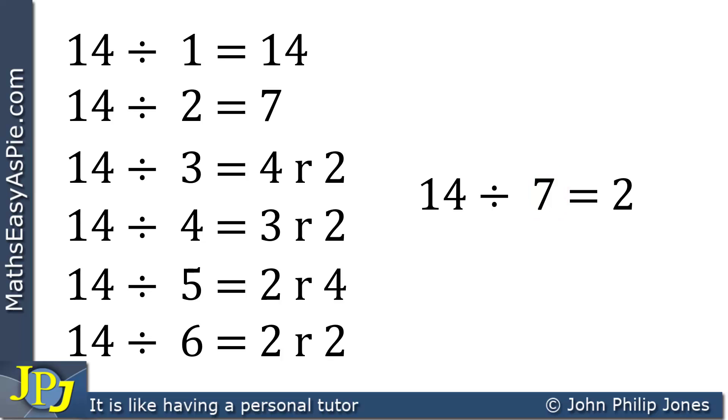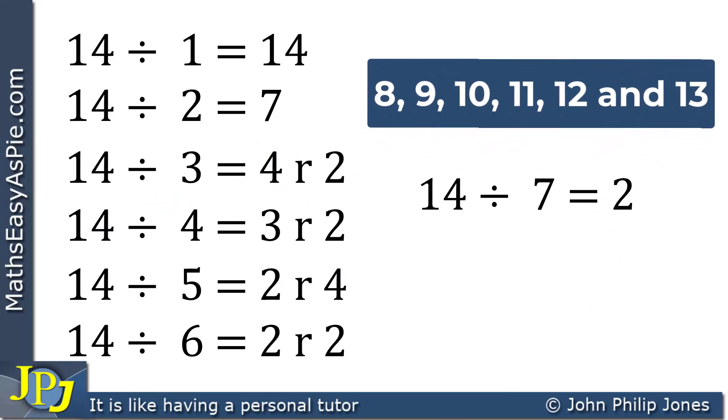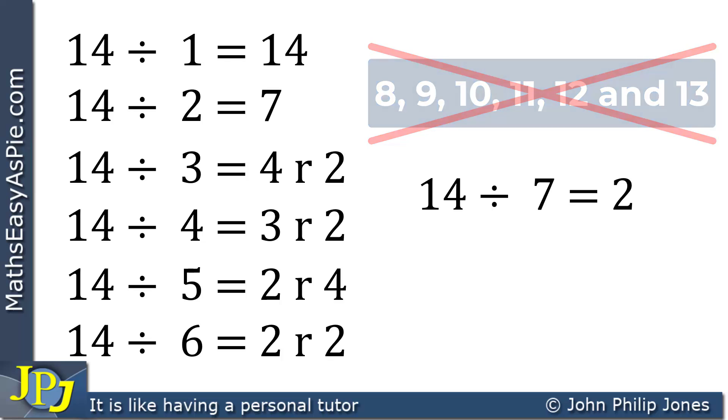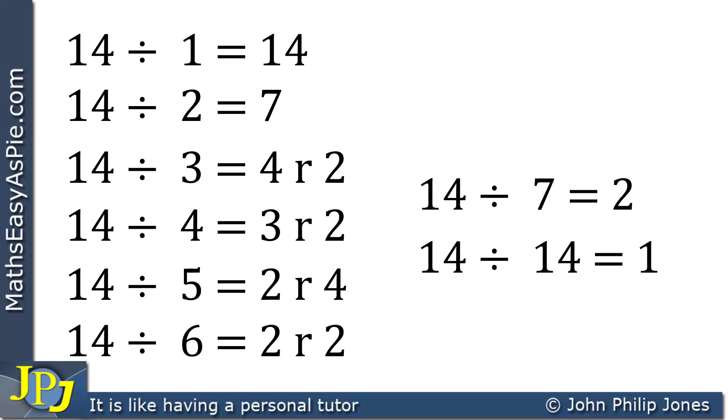Now if I was to divide by 8, 9, 10, 11, 12, and 13, they'd all go once and they'd all have a remainder. So none of those are factors of 14. But we have to remember we can divide the 14 by 14, which goes once. So 14 is a factor of 14.